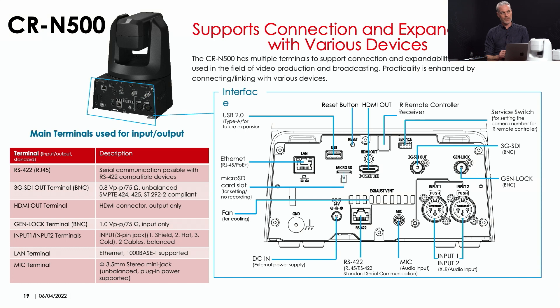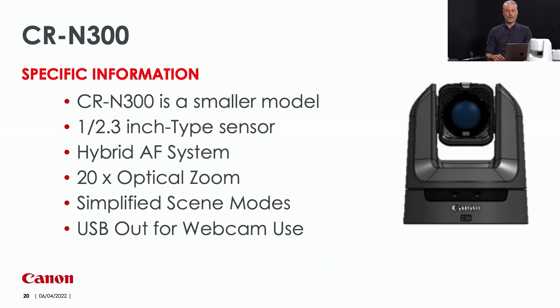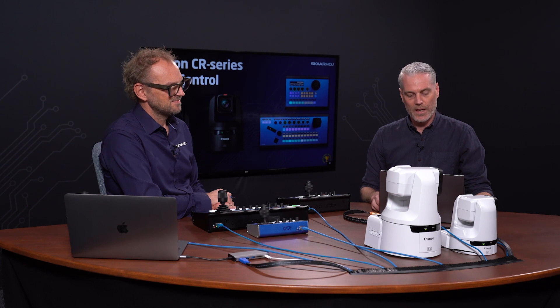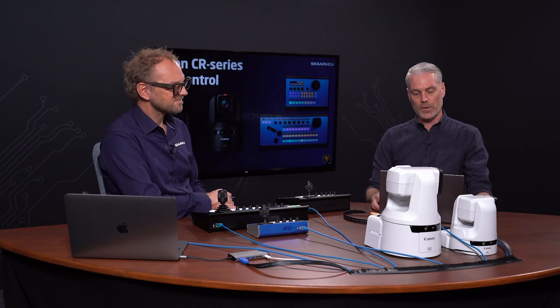The CR-N500 also features Genlock, which is not present in the CR-N300. The camera can be powered over Ethernet via PoE Plus, but you can also use the provided AC adapter in the box if you don't have a PoE switch. On our table here you can see both cameras — the CR-N500 is the big one and the CR-N300 is the smaller one — quite a difference in size and weight.